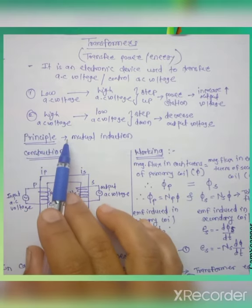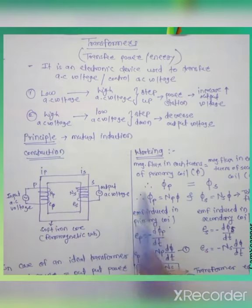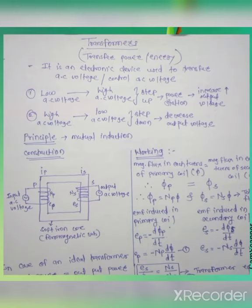Transformer works on the principle of mutual induction. There are two types of induction: self-induction and mutual induction. In mutual induction, there are two coils — primary coil and secondary coil. When current changes in one coil, it automatically induces current in the secondary coil. This is the working basis for our transformer.